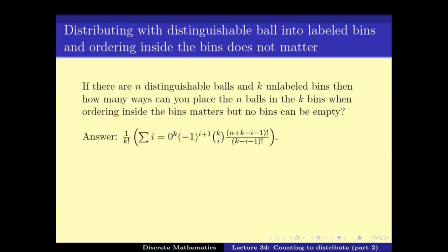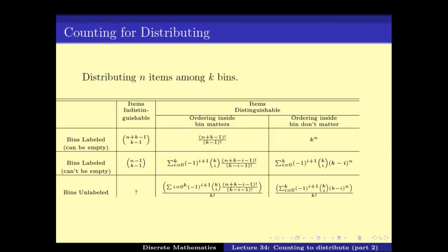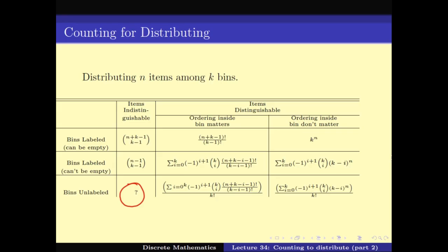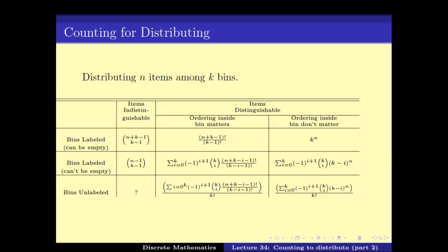Similarly, we can handle the remaining case when ordering inside bins matters and bins are unlabeled. With this, we have covered essentially all cases except one: when items are indistinguishable and bins are unlabeled. This is a very hard problem and we will be talking about it in the next video. Thank you.